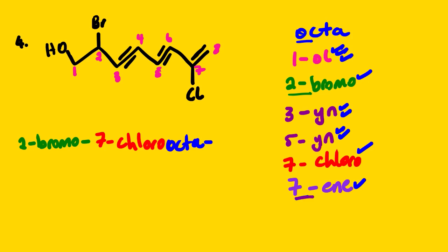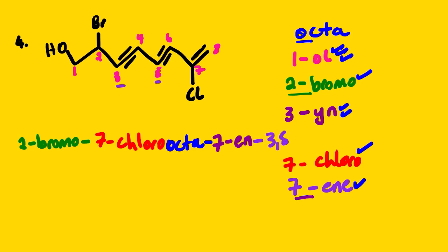In this case we have three functional groups, so we start with the alkyne followed by the iodine substituents and lastly our alcohol. We have 7-en, then our alkynes at positions 3 and 5, so it's 3,5-diin. Be very careful because if we have two, we write 'di.' And then lastly we have our alcohol: hyphen-1-ol. It's a very long IUPAC name, but it is interesting. If you got it correct, it means you understand this chapter.